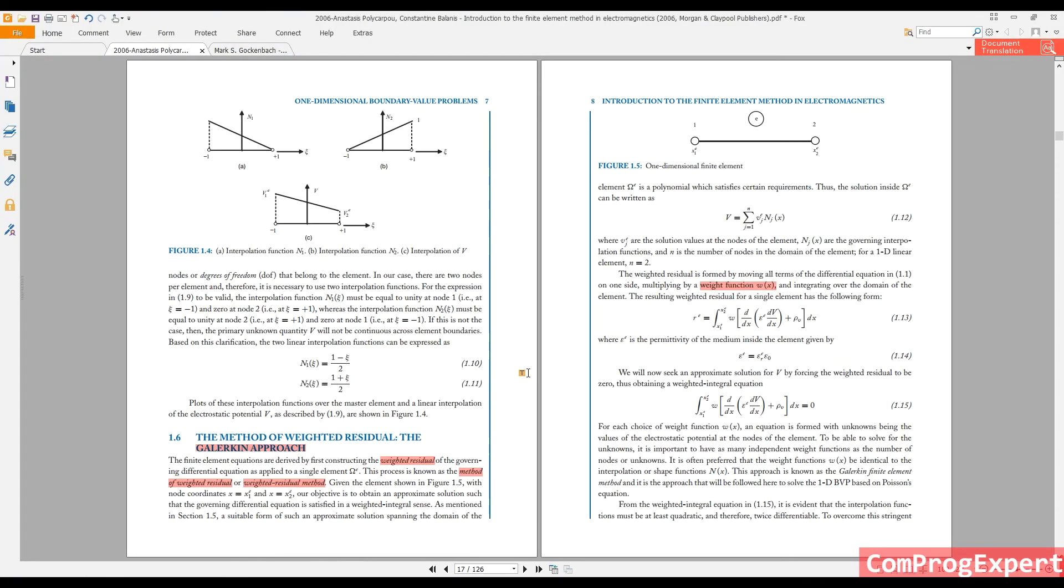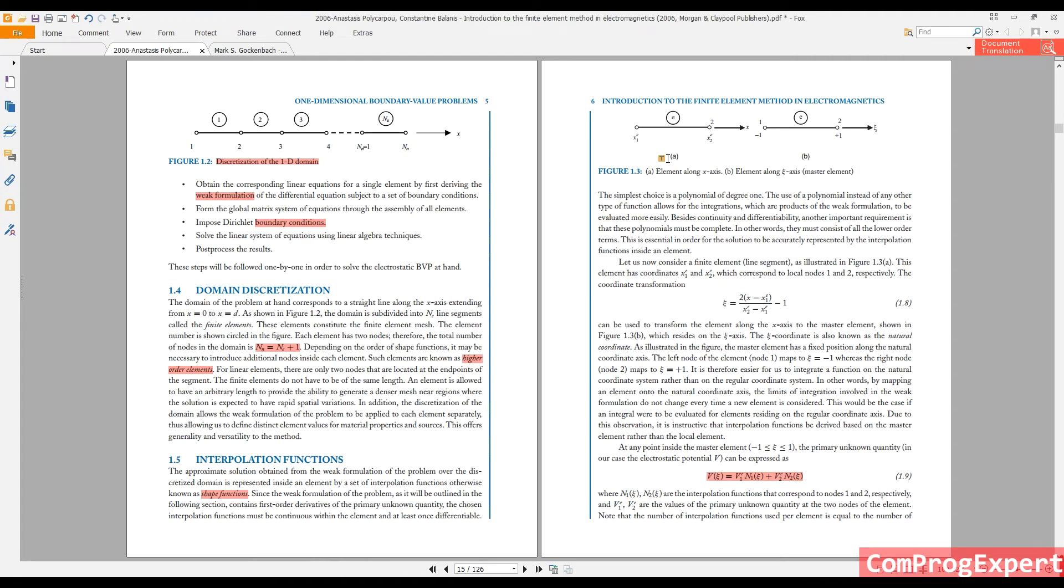But if you consider this reference element, because we can translate integrals from each mesh element to a standard element, to reference element. So we can make integrals easier. So we use this equation 1.8 for translation. Actually, you can see this equation. Zeta, that is the standard coordinate system. Zeta is equal to 2 times x minus x1 divided by x2 minus x1 minus 1. So this is the standard element. From minus 1 to 1. And this is the element along x-axis.